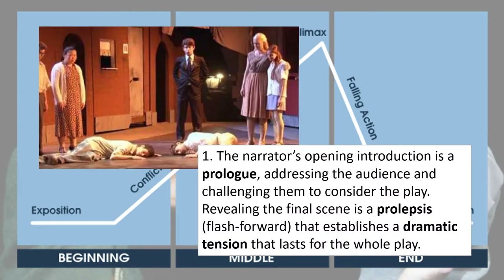Firstly, we get the narrator's opening introduction in the form of a prologue, which is a kind of speech given before the play. This addresses the audience and challenges them to consider the events of the play. We also get a reveal of the final scene, which is an example of a prolepsis — a flash forward. This is a key device in establishing dramatic tension, in that it gives the audience an idea of what's going to happen but not how, so we're tuned into watching events unfold because we know where they're leading.